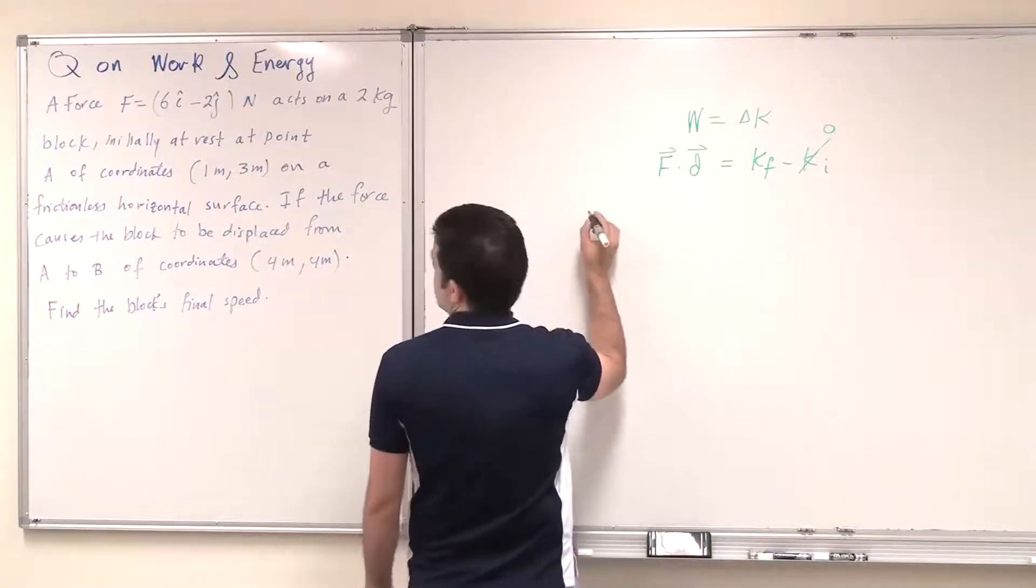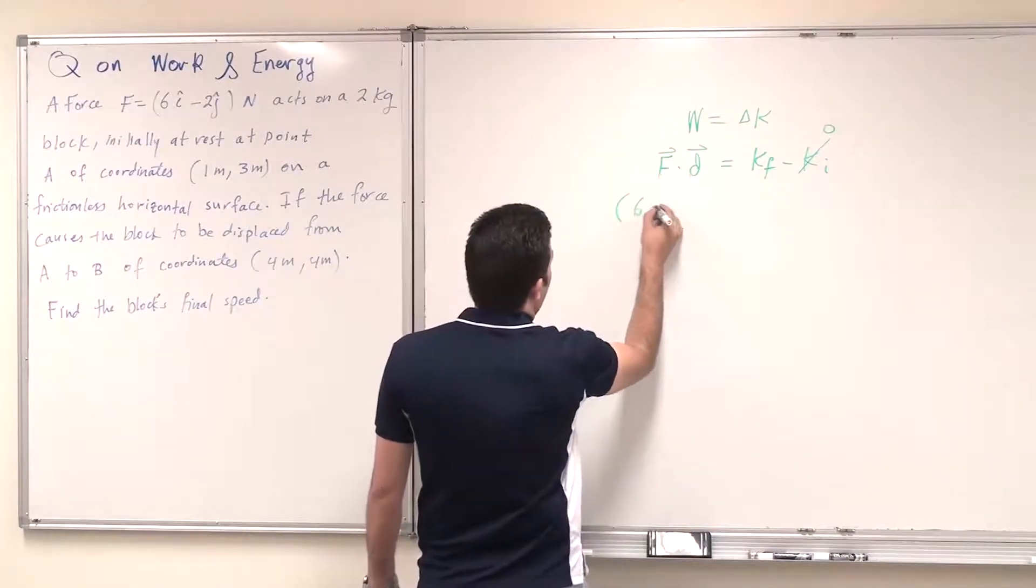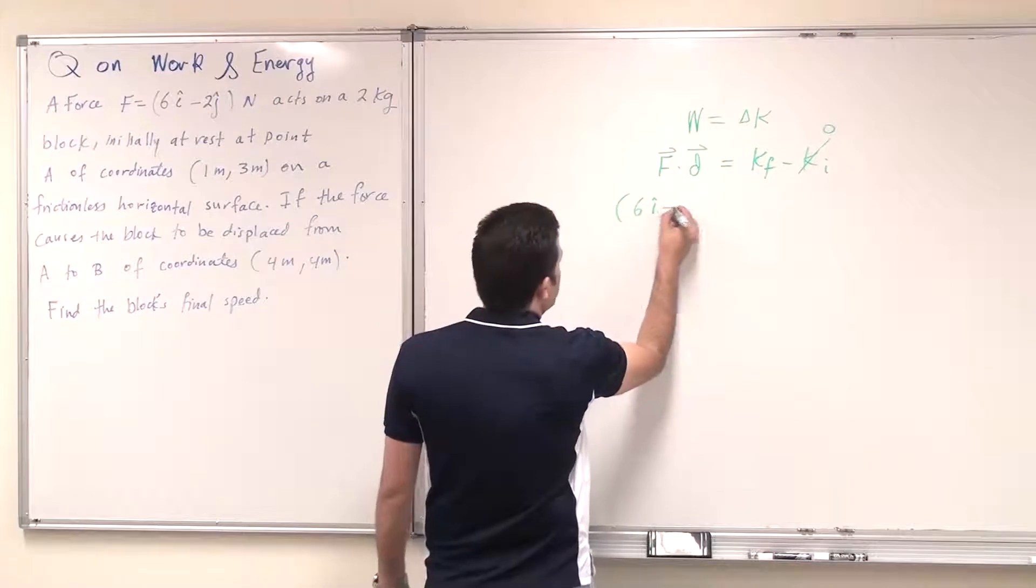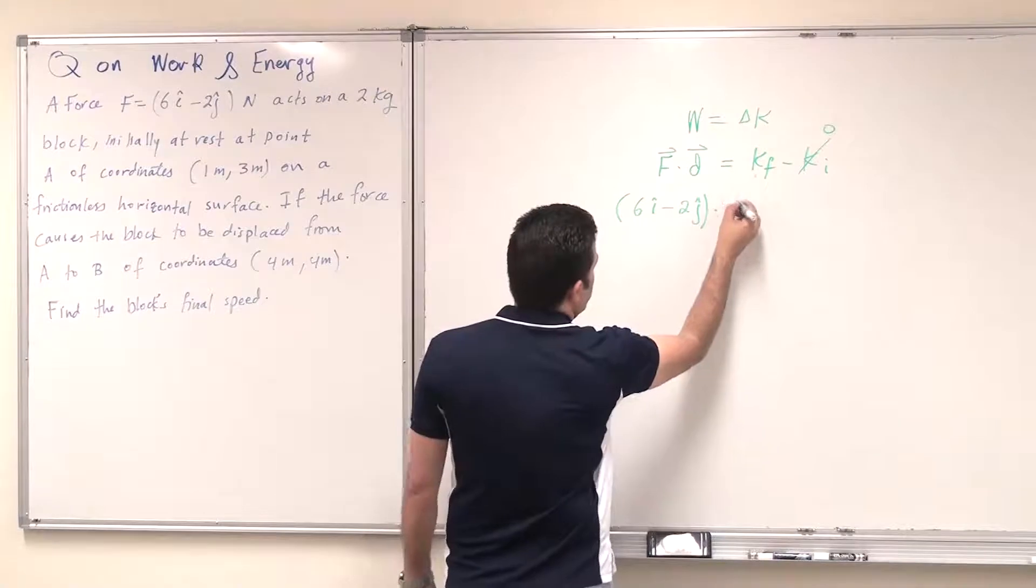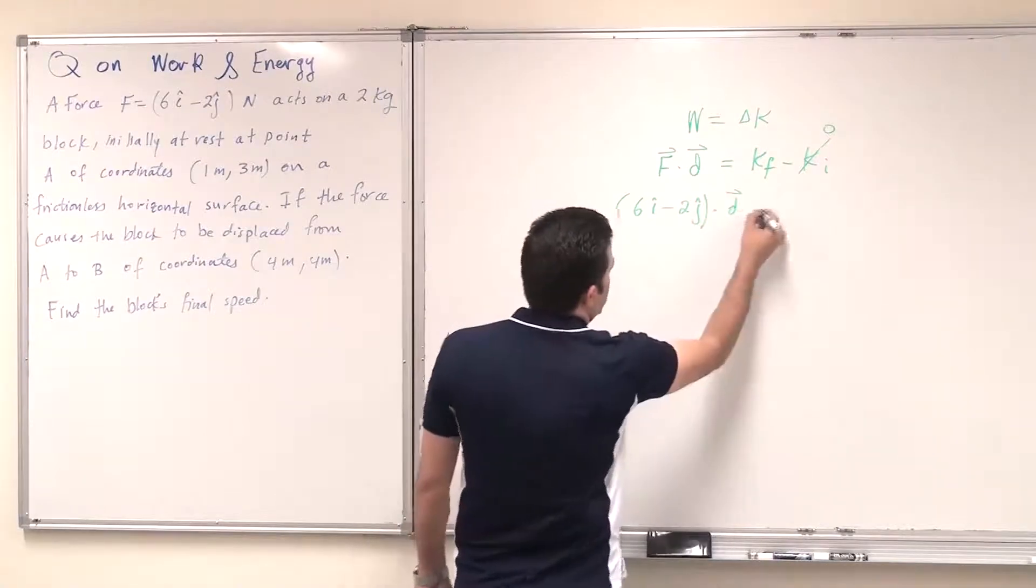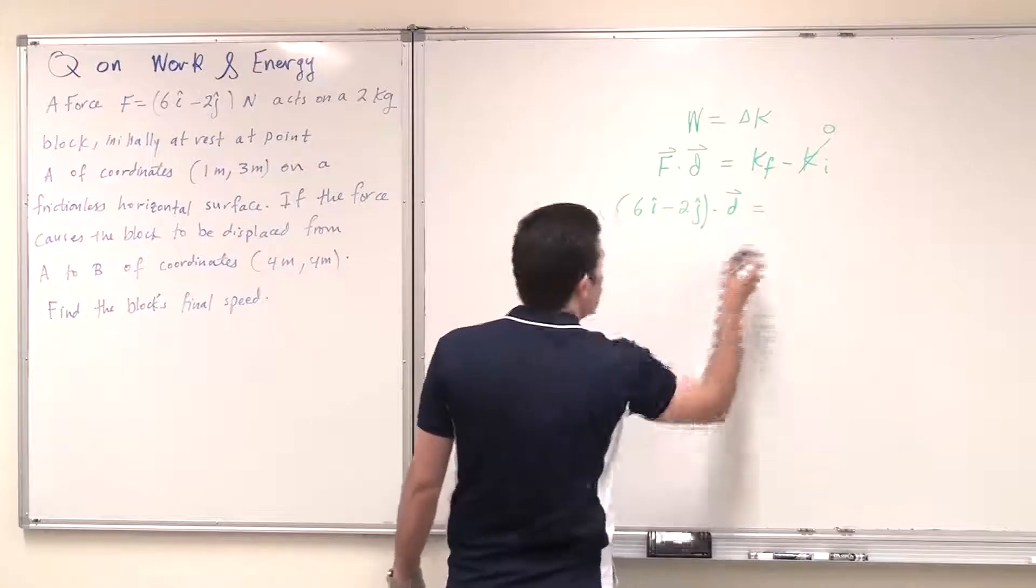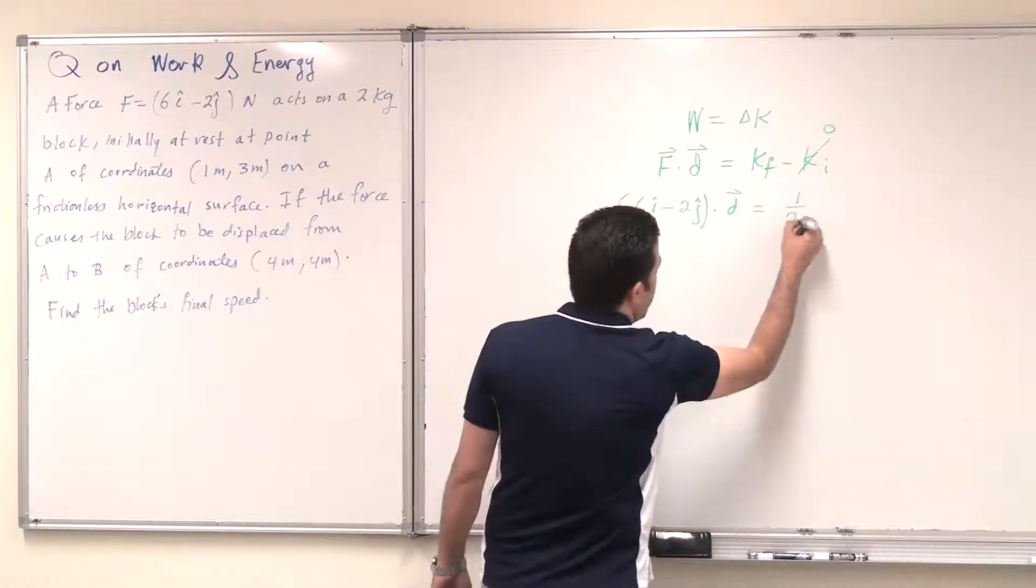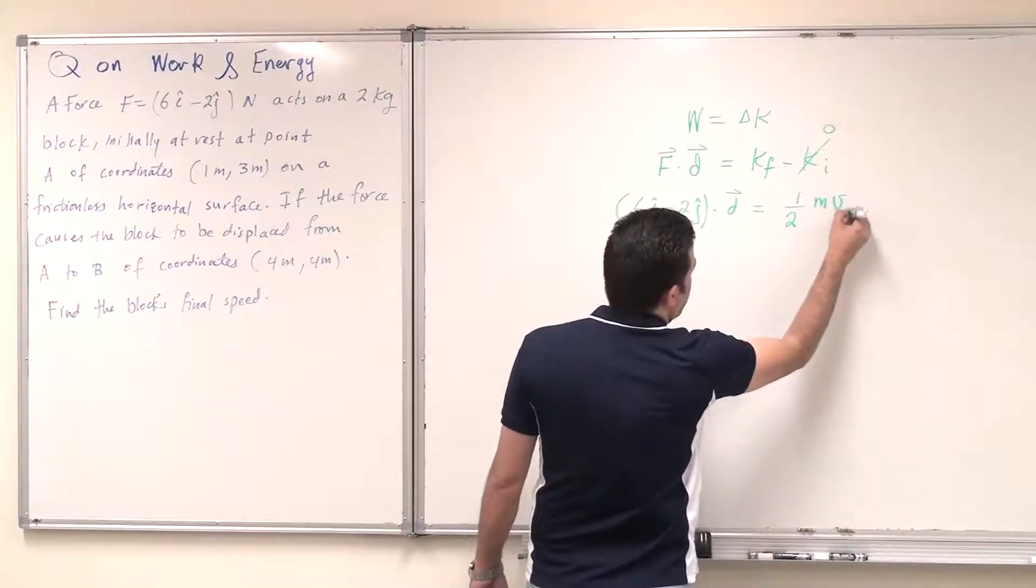And the force as a vector should equal 6i hat minus 2j hat. And this should be dot product with the displacement that I need to find. And this should equal to K final, which is half, and the mass is 2m v final square.